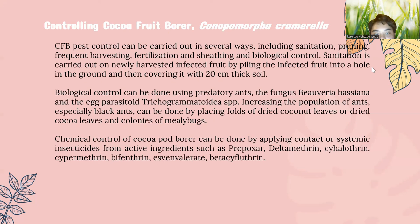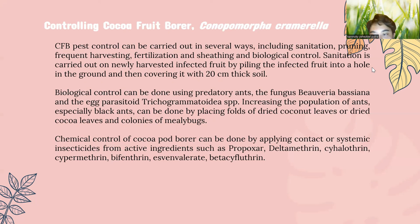Increasing populations of black ants can be done by placing folds of dried coconut leaves and dried banana leaves and colonies of weaver ants. Chemical control of the cocoa pod borer can be done by applying contact or systemic insecticides with active ingredients such as propoxur, deltamethrin, cyhalothrin, cypermethrin, fenvalerate, s-fenvalerate, and beta-cyfluthrin.